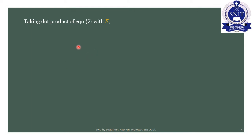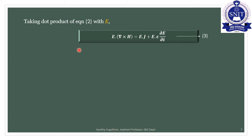So we compute E dot (del cross H), combining E dot (del cross H) with equation number 2.